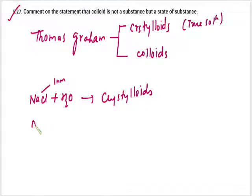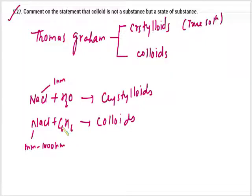And if we dissolve NaCl in benzene, then it will form colloid. Because in this particle size will be 1 nanometer to 1000 nanometers. Because it will not dissolve completely. The benzene is an organic compound. So it will behave like crystalloids or colloids.